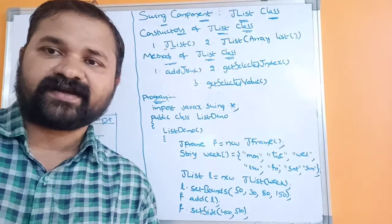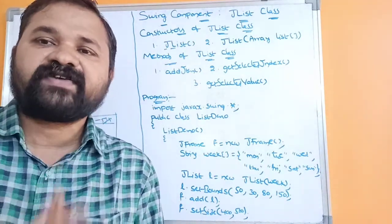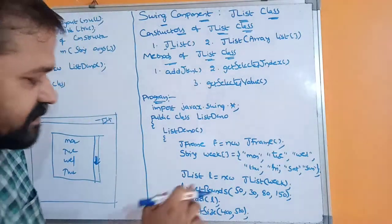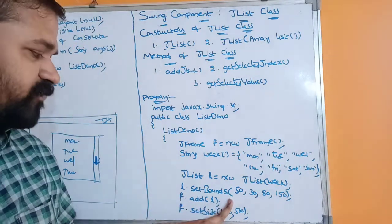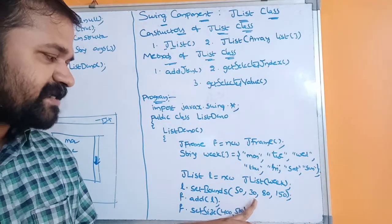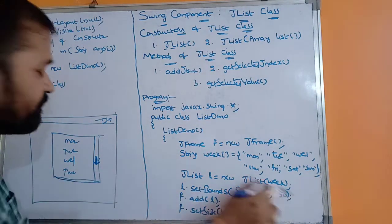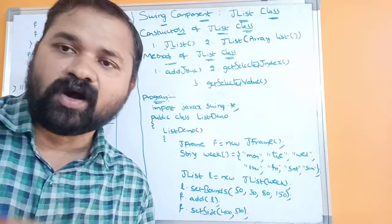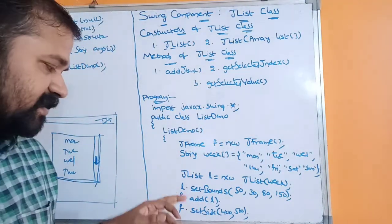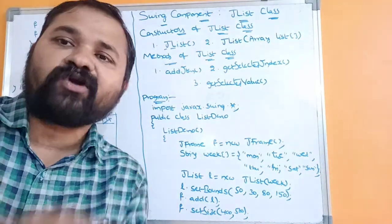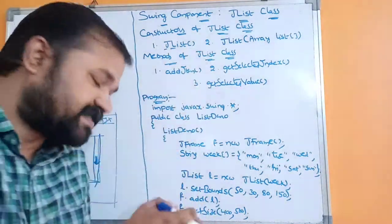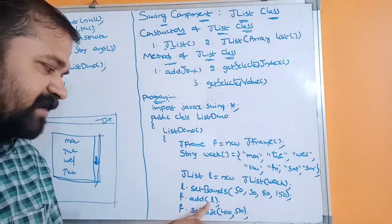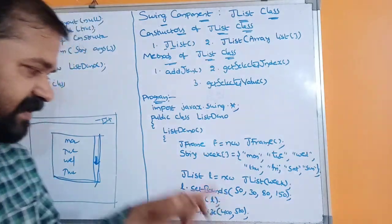Once a control is created, we need to specify boundary values to position it. These are specified with the setBounds() method: l.setBounds(50, 30, 80, 150) — where 50 is the x coordinate, 30 is the y coordinate, 80 is the width, and 150 is the height. If we give a larger height value, it can accommodate all the items and no scroll bar is needed. Then we add the control to the frame using f.add(l).